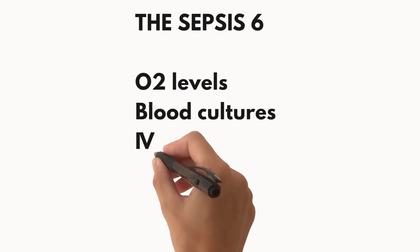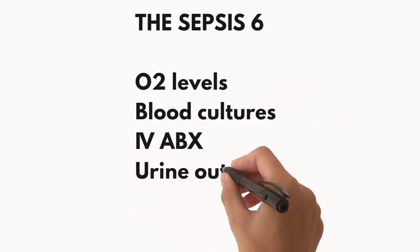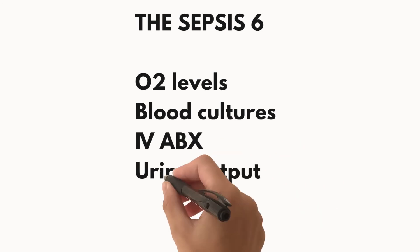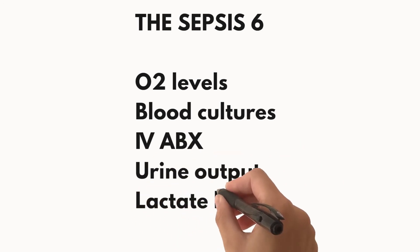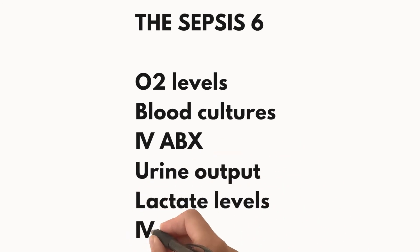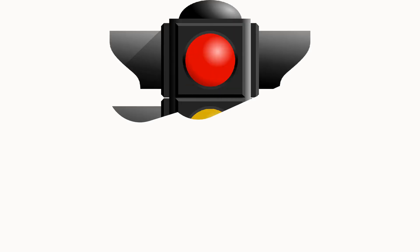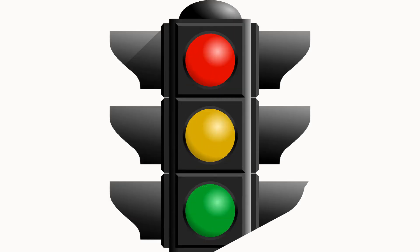The Sepsis Six in terms of management include: oxygen, taking blood cultures, IV antibiotics, monitoring urine output, measurement of lactate, and IV fluid resuscitation. For children, a traffic light system is utilized where green is low risk, amber is intermediate risk, and red is high risk.